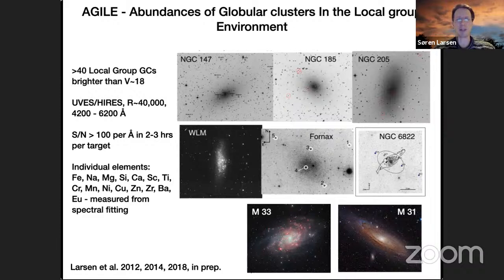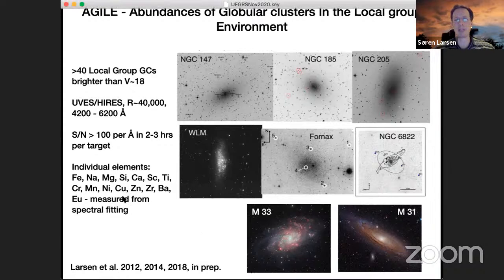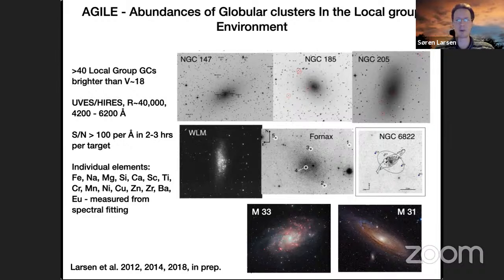Over the past several years we've been collecting integrated light spectra of globular clusters in the local group and in a few cases a little bit beyond, down to a magnitude of about 18 — a practical limit where you can still get a good spectrum in a few hours of integration time with an instrument like UVIS on the VLT or HIRES on the Keck telescope. These are images of the galaxies we have observed, and over on the left is a list of elements that we measure from these spectra.